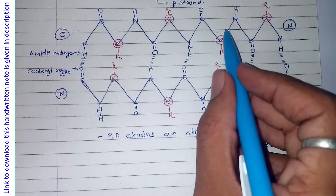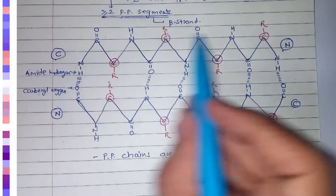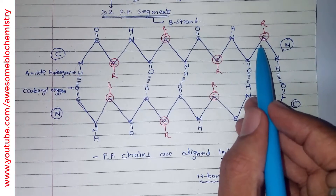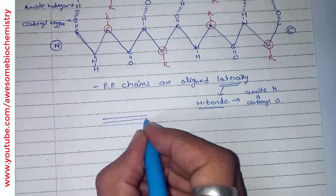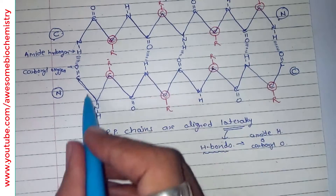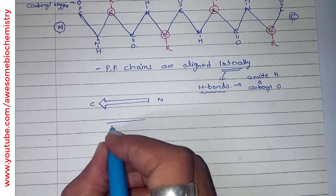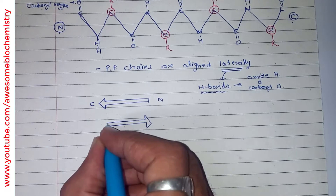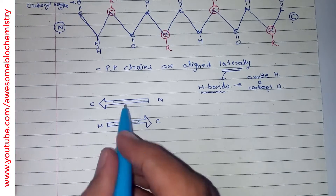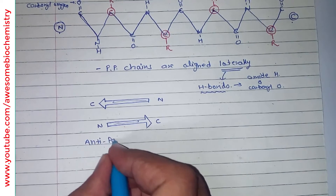To schematically illustrate this beta structure, we can use a broad arrow. In this case, this is the N-terminal and this is the C-terminal. We know the peptide bond direction is from N-terminal to C-terminal, so we represent the entire chain by a single broad arrow — the base of the arrow at the N-terminal and the pointed part at the C-terminal. For the lower chain, the N-terminal is on the left and C-terminal on the right, but the lower arrow points in the opposite direction.